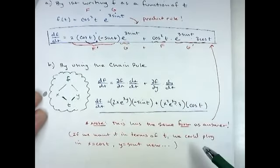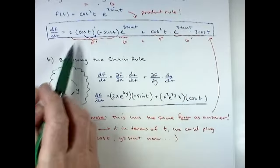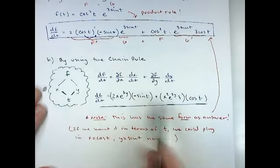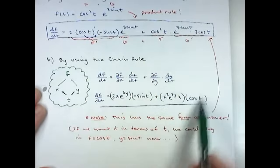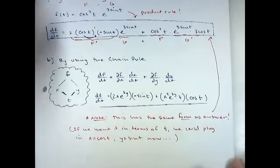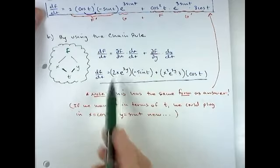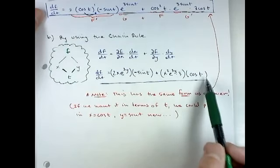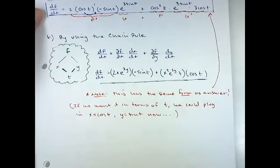What I wanted you to see is this has the same form of answer as the direct substitution method — it's the same answer. And if we allow ourselves to just leave the answer in terms of x and y, knowing that x = cosine and y = sine if you need to substitute in, this might be easier than doing it strictly as a function of t.